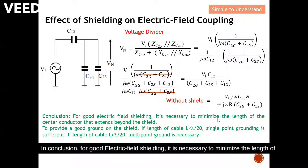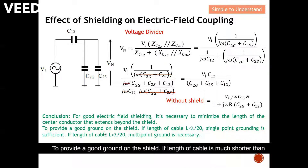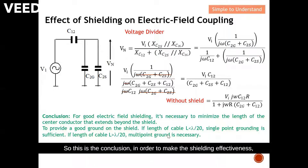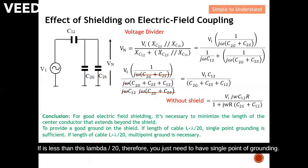In conclusion, for good electric field shielding it is necessary to minimize the length of the center conductor that extends beyond the shield, and to provide a good ground on the shield. If the cable length L is much shorter than λ/20, single-point grounding is sufficient, though I still encourage two-point grounding. If the cable length L is greater than λ/20, multiple-point grounding is needed to achieve sufficient shielding effectiveness.